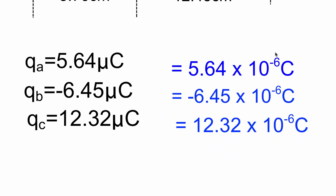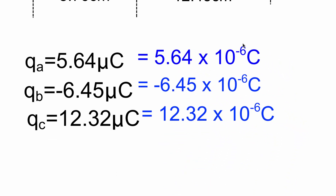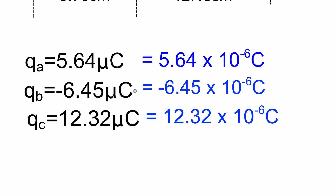Coulomb's law doesn't work with units of microcoulombs, so here's the conversion: micro means times 10 to the negative 6. So QA is 5.64 times 10 to the negative 6 Coulombs, and QB is negative 6.45 times 10 to the negative 6 Coulombs.